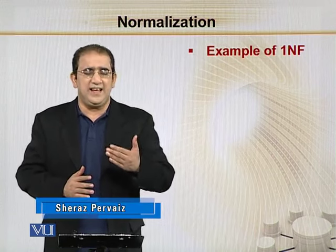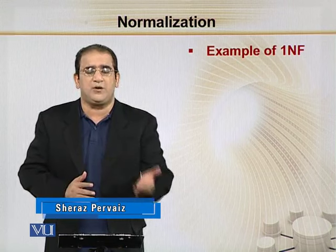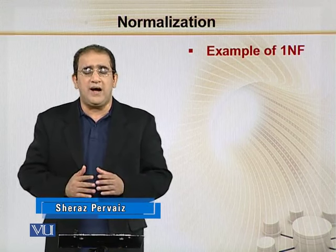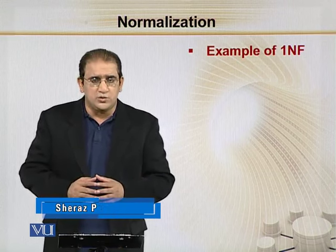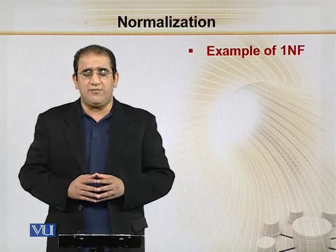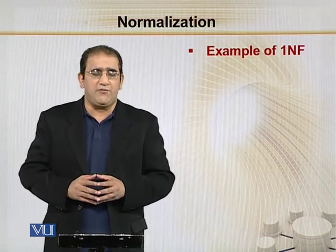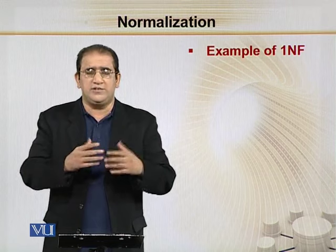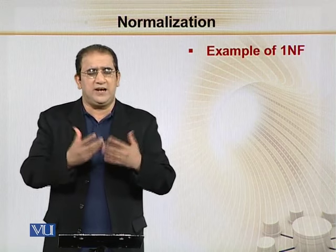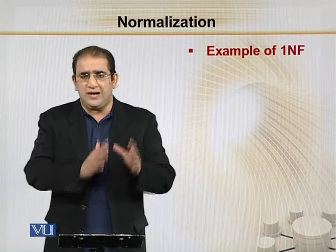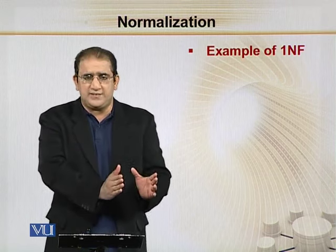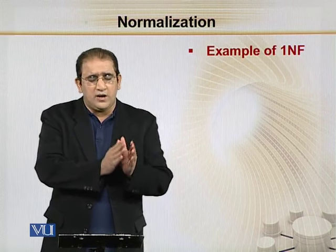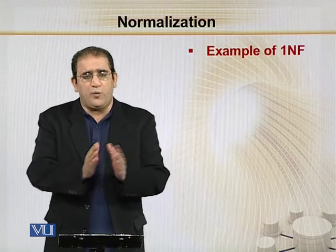यह कह लें कि यह एक उसका prerequisite है — 2NF करने के लिए, you have to pass through 1NF, और 1NF करने के लिए, you have to pass through — आपके पास एक report हो जो कि 0NF है, या unnormalized है, whatsoever. तो unnormalized data से, यानि report से, आपका starting point होगा, and moving forward.